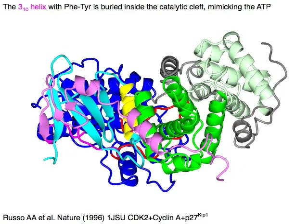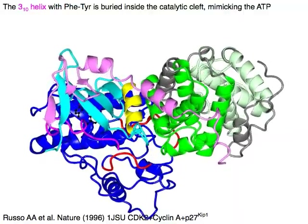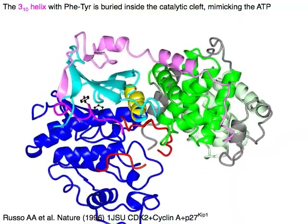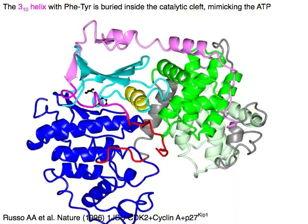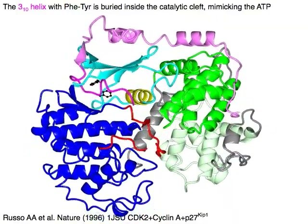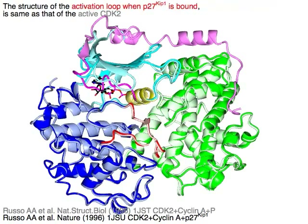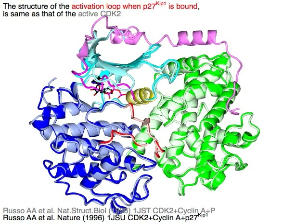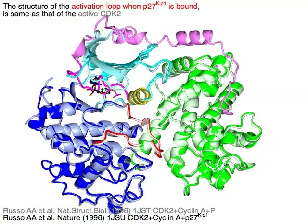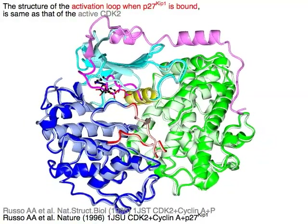The 310 helix with phenylalanine and tyrosine in magenta is buried inside the catalytic cleft between the N-lobe in cyan and C-lobe in blue, mimicking the ATP. The structure of the activation loop in red, when P27-KIP1 is bound, is the same as that of the active CDK2 in pink.